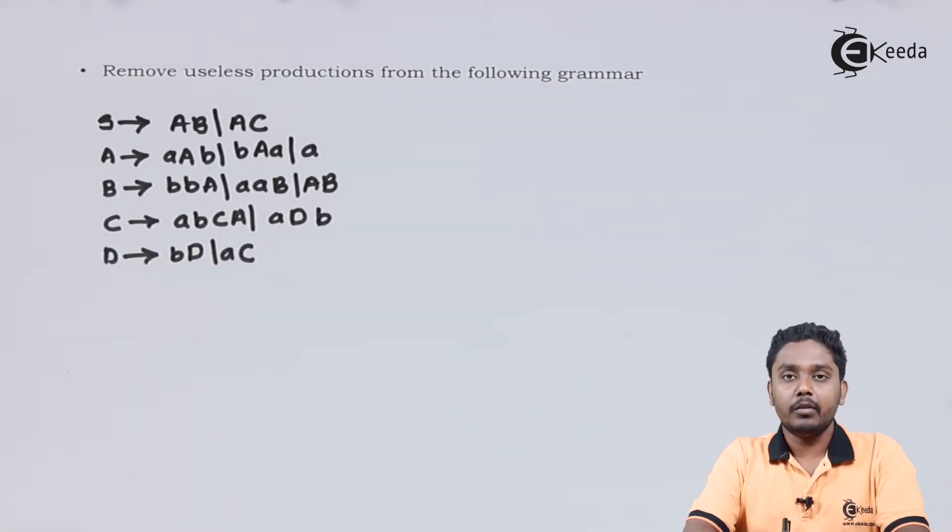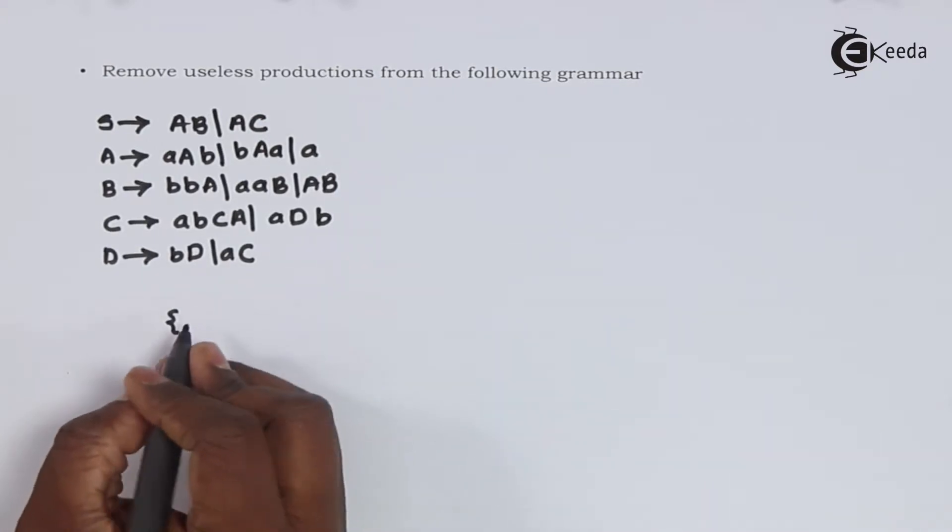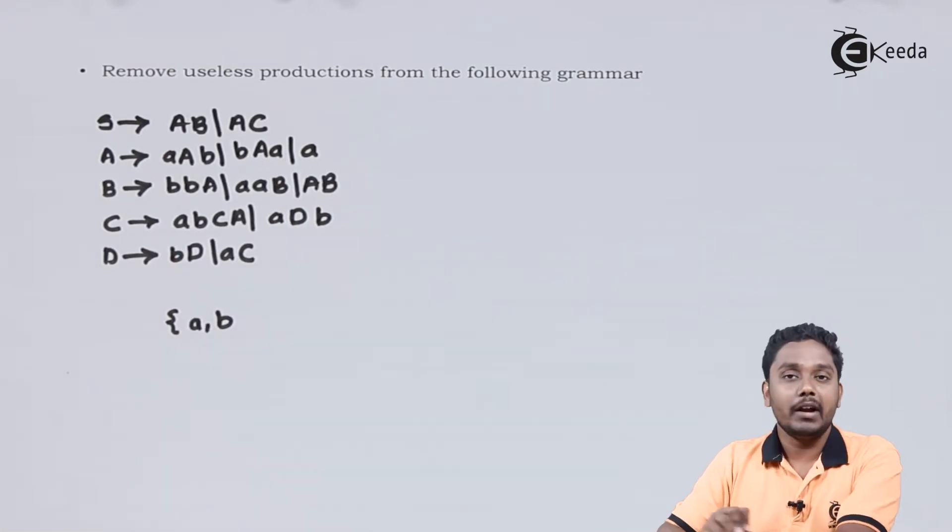First, let us try to find out the non-terminals which are producing at least some terminals. We start with the set of terminals. A and B are terminals. Let us see what are producing A and B.